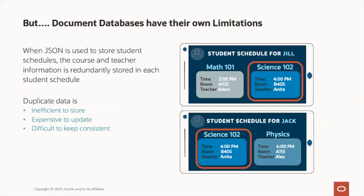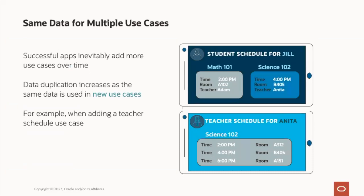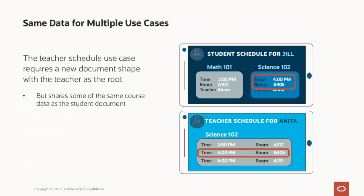But document databases have their own limitations. When JSON is used to store student schedules, the course and teacher information is redundantly stored in each student's schedule. For example, both Jill and Jack are enrolled in Science 102 and the information for that class is duplicated. Duplicated data is obviously inefficient to store, expensive to update, and difficult to keep consistent as you have multiple places in which you need to perform those operations. Successful applications will inevitably add more use cases over time, and data duplication increases as the same data is now used in new use cases. For example, when adding a teacher schedule use case, there's now a redundant entry for the time and the classroom for both Jill as well as Anita for Science 102.